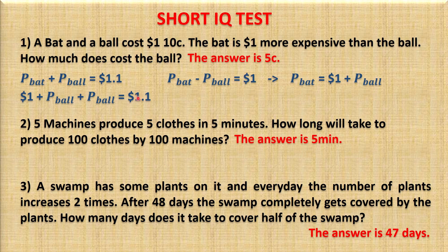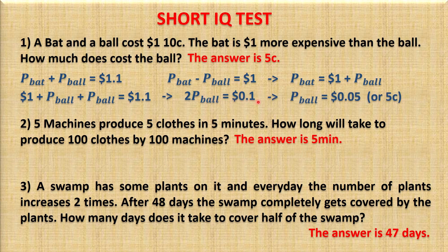We move $1 to the right side, where it becomes minus, leaving us with $0.10. The two bow prices are summed, giving us 2 multiplied by the price of the bow equals $0.10. Dividing $0.10 by 2, the price of the bow is $0.05.